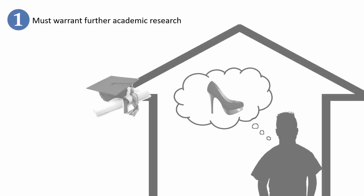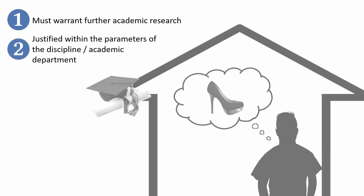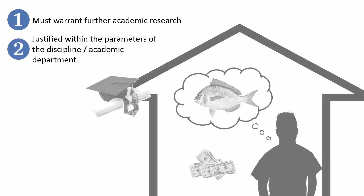Number two: the topic of the study must be justified within the parameters of your discipline and your academic department. In other words, it shouldn't interfere with other domains. For instance, if you are in the commerce field — business-y stuff — why would your topic be about marine biology?